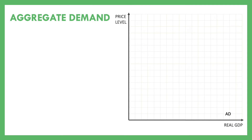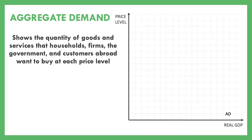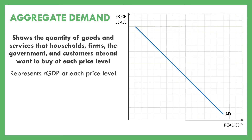The first idea we need to introduce is aggregate demand. The regular demand curve showed us the total amount of a product that people would buy at any price. Similarly, aggregate demand shows us the total amount of goods and services that households, firms, the government, or customers abroad want to buy at every single price level. The aggregate demand curve is downward sloping, just like a regular demand curve.